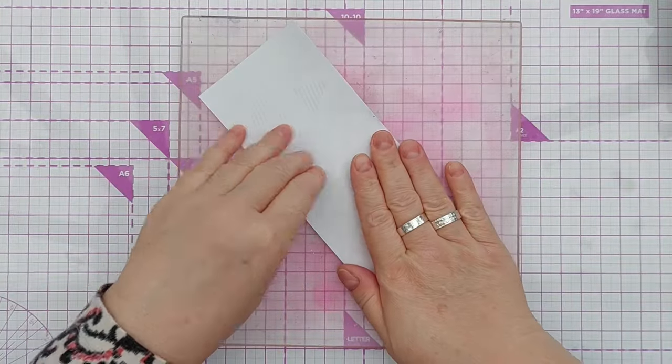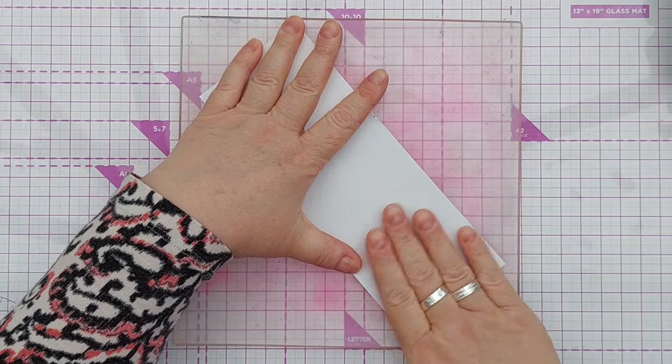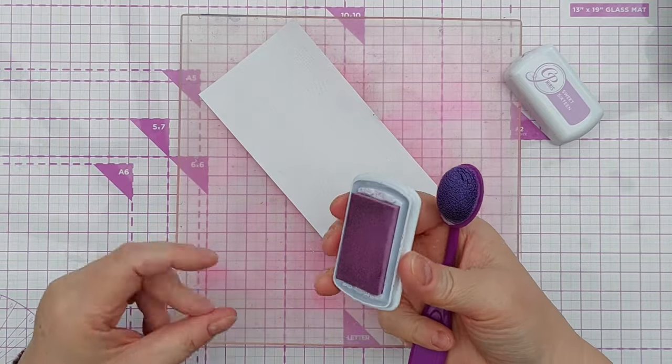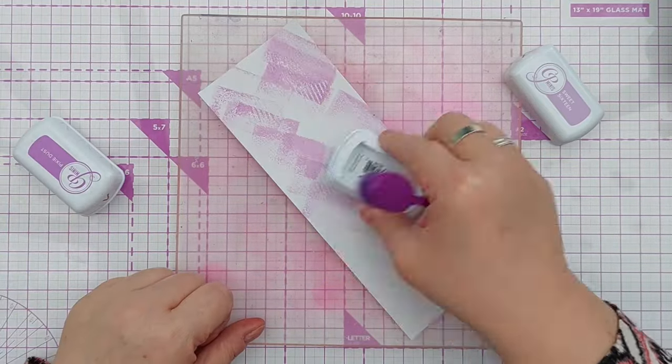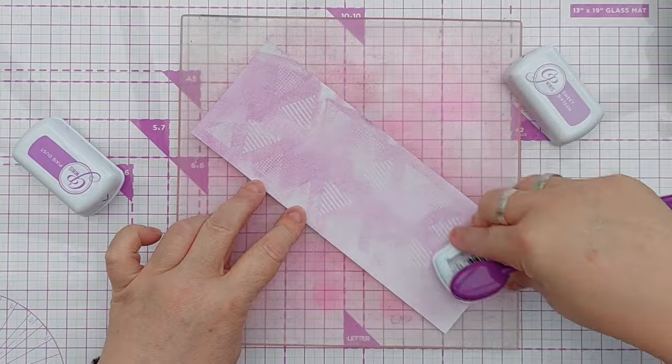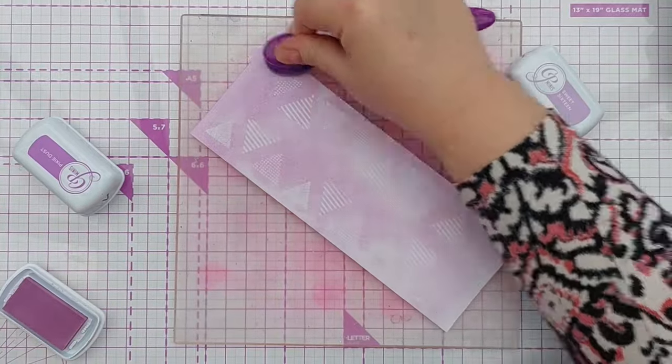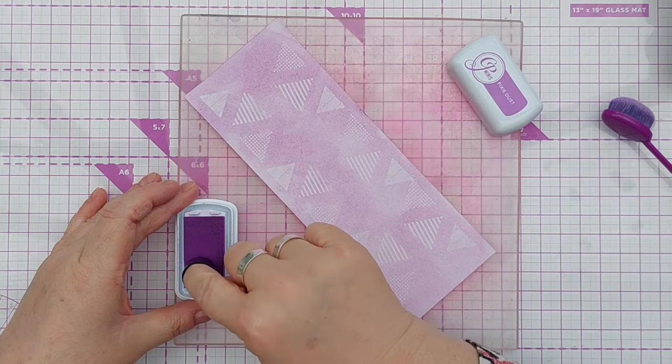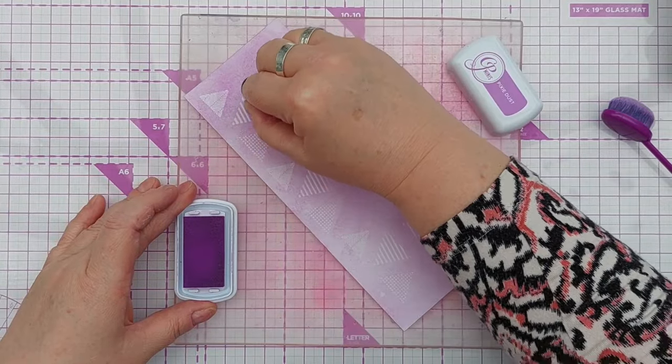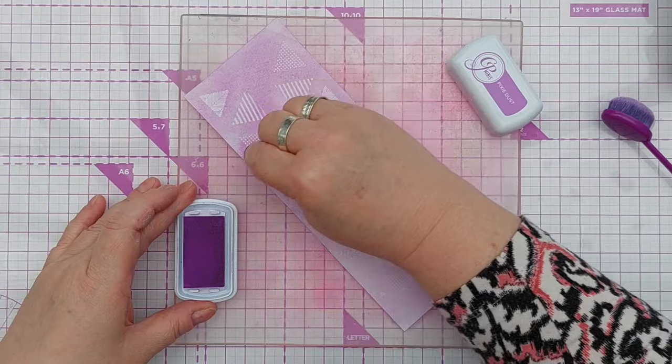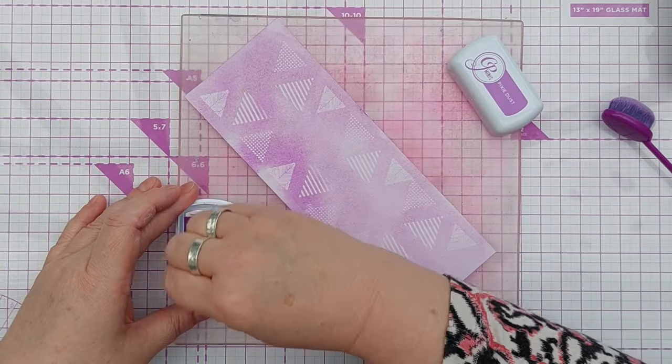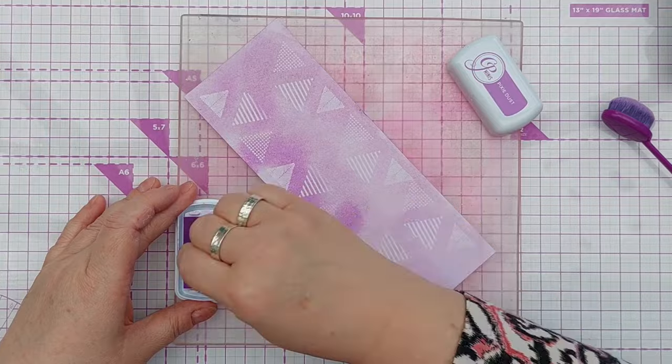So that's all set and cooled. I'm going to pop it on my grid mat and add some color. I'm actually going to bring in Sweet 16 first, which is a lighter shade of the Pixie Dust. Now I'm going to go in with Pixie Dust and a finger dauber and add some variation to each triangle, so some of it will be Sweet 16, some of it will be Pixie Dust, just a bit of variation.